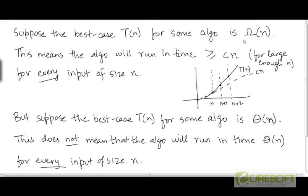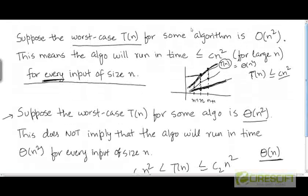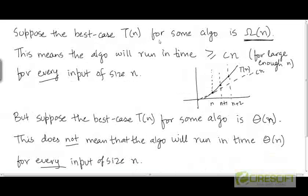So when we express the best case as Ω(n), we are actually making a statement about the running time for all inputs of size n. Similarly, when we express the worst case running time in terms of O(n²), we are making a statement about the running times for all inputs of size n. If the worst case has an upper bound, that upper bound applies to all inputs of size n. Likewise, if the best case is represented by a lower bound, that lower bound applies to all inputs of size n.